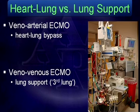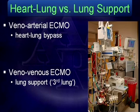VA ECMO replaces the patient's heart and lung function. On the other side, we have veno-venous ECMO. Veno-venous ECMO does not replace anything — it essentially is splicing a third lung into the patient's circulation to provide pure lung support. So veno-arterial ECMO is heart and lung support, while veno-venous ECMO is purely lung support.